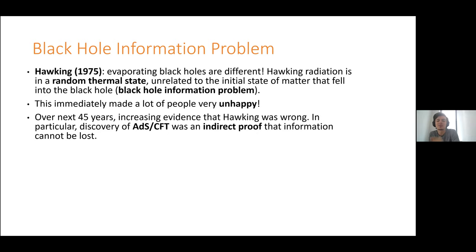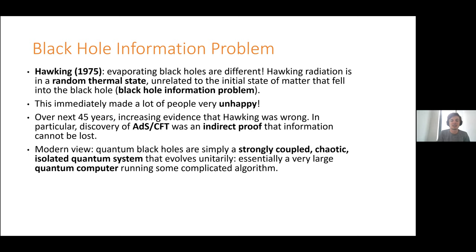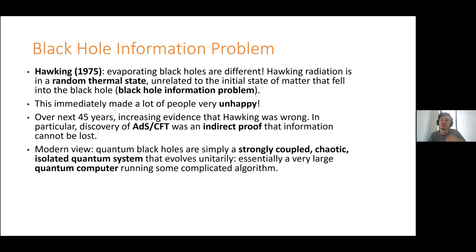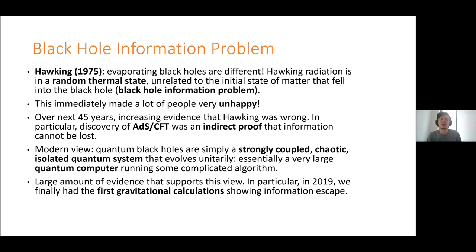On the CFT side of the duality, we just have ordinary quantum mechanics — we know it follows Schrödinger's equation, it's unitary, no information is lost, and hence also presumably on the ADS side information can't be lost. But what we didn't have for a long time was an explanation of why Hawking's calculation that claimed to show information was lost is actually wrong. We've made a lot of progress, and in the modern view we've really reached the point where we think quantum black holes are just ornery quantum mechanical systems — strongly coupled, very chaotic, isolated quantum systems evolving unitarily according to the Schrödinger equation.